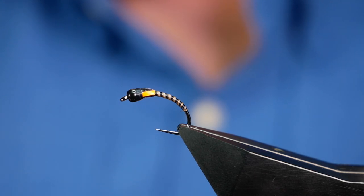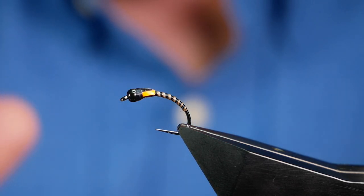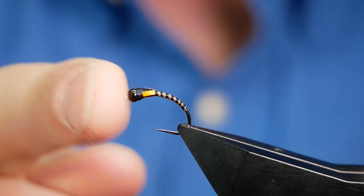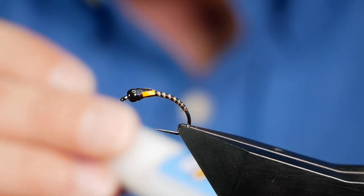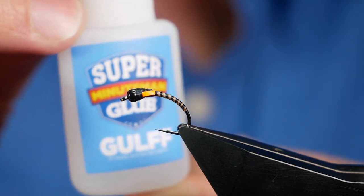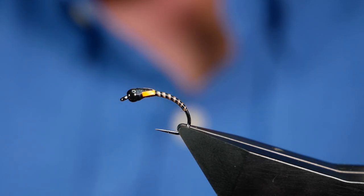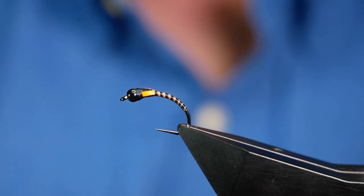So last but not least, we're going to start the varnishing process. Now what I usually do, I'll explain what I do. I'm not going to do it because it does take a long time. So I'll tie up several of these to this point. And then what I do is every one of them gets a coat of super glue and sent off to the side to dry. And I leave them for a couple of hours or whatnot. So imagine I've super glued this fly.